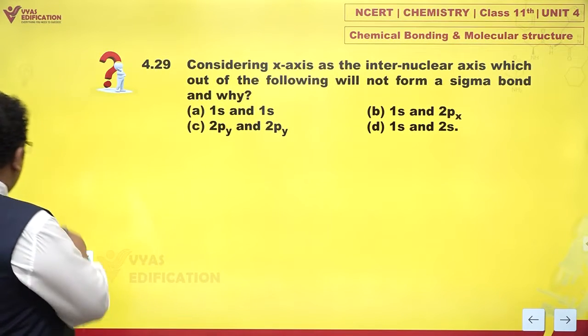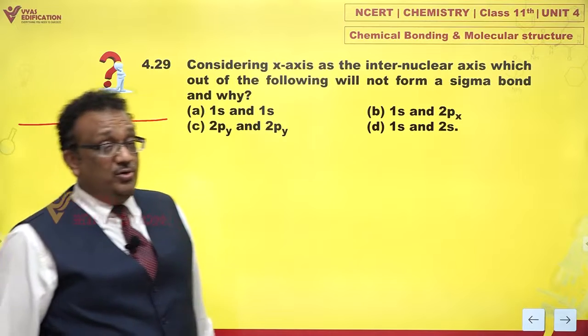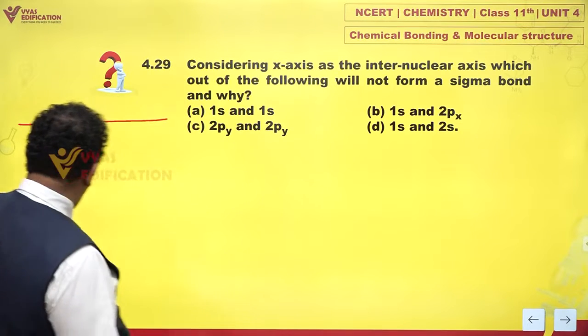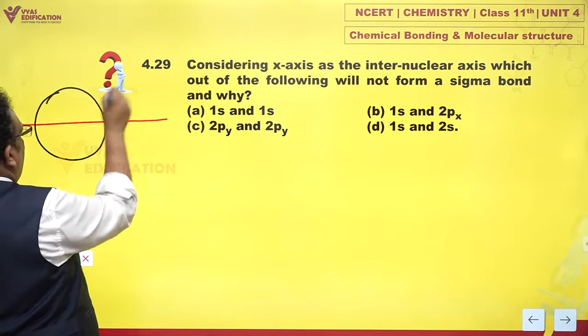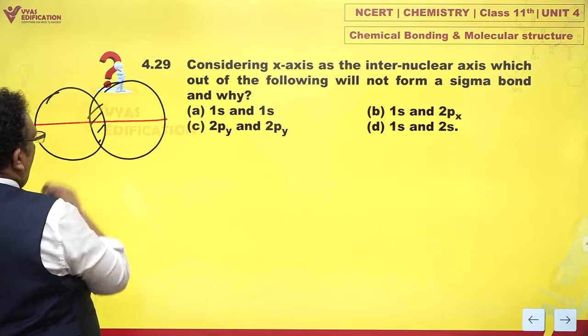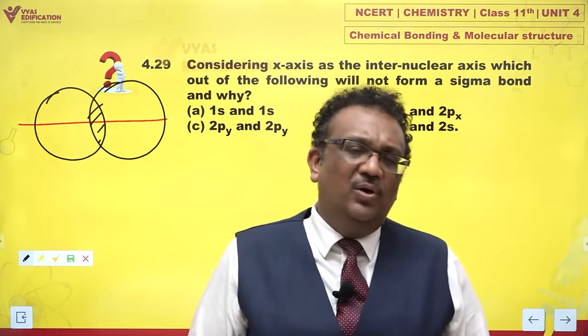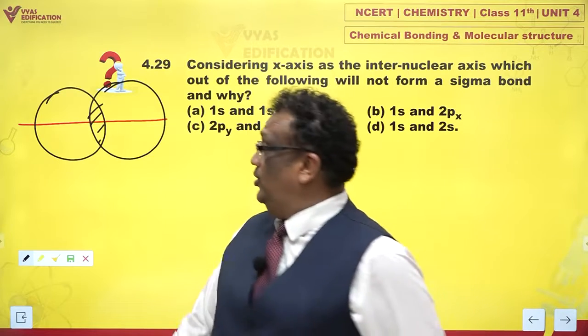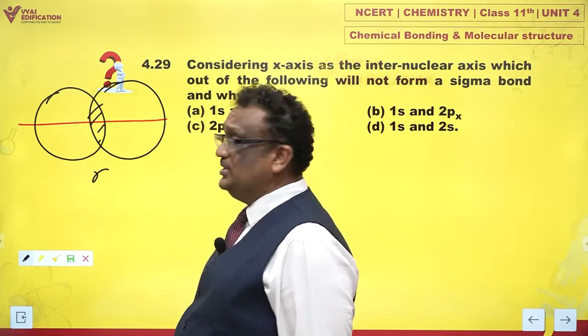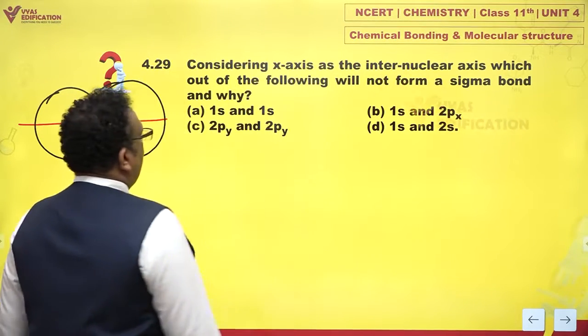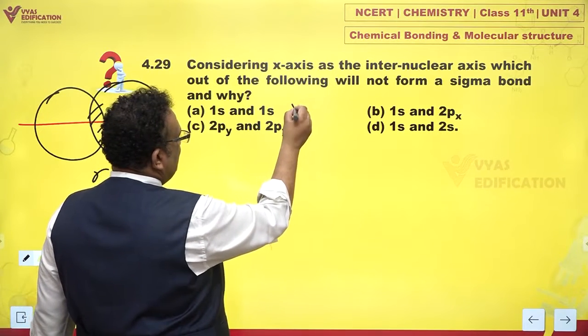We are told that x-axis is the axis along which the orbitals are going to approach. And if you have s-orbitals approaching along x-axis, actually s-orbitals are round, spherical. They may approach along any axis, it doesn't matter. And do I get a sigma bond? Yes, I get a sigma bond. So yes, it will form a sigma bond.